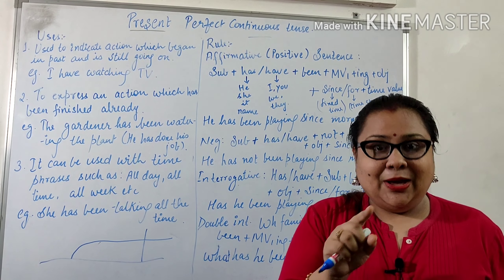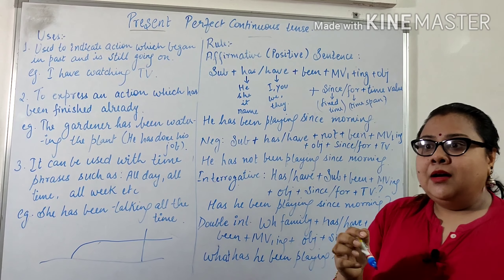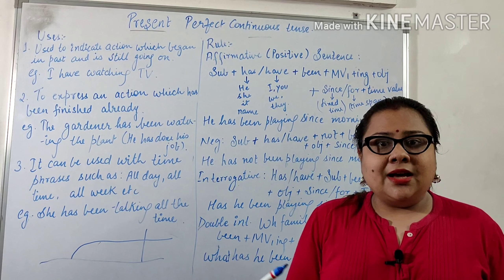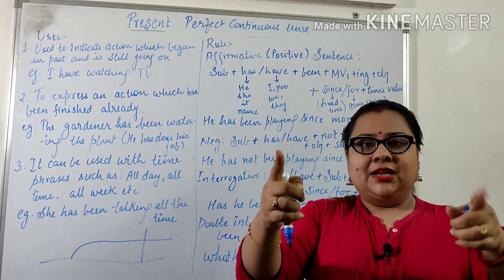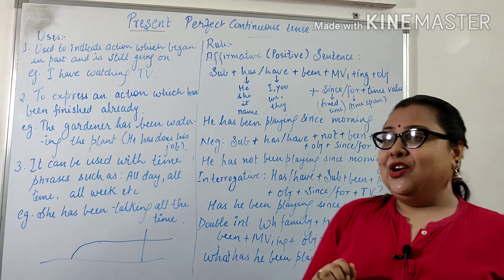For example: 'He has been playing since morning' — here I've given a fixed time point, so we use since. But if I say 'He has been playing for three hours,' you're just mentioning the time span. Since 'he' is singular, we use has been playing — main verb first form plus ing — since morning.